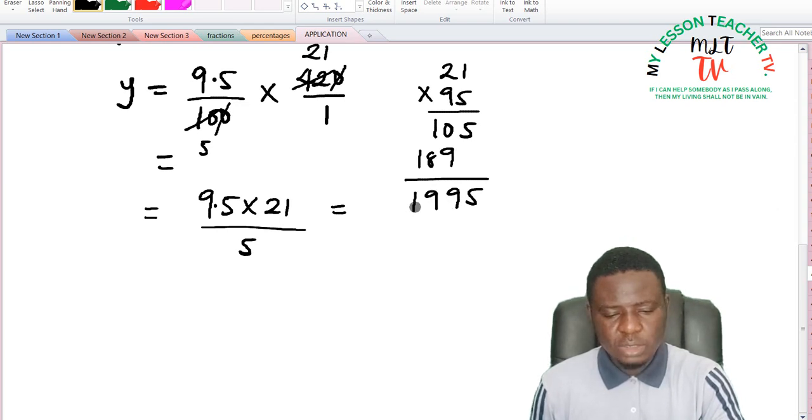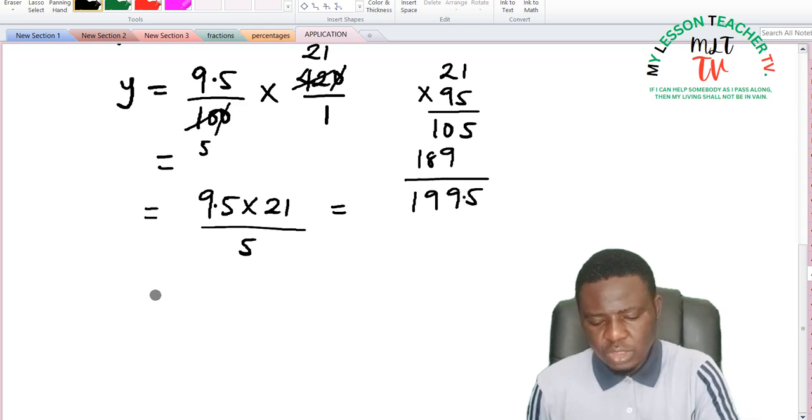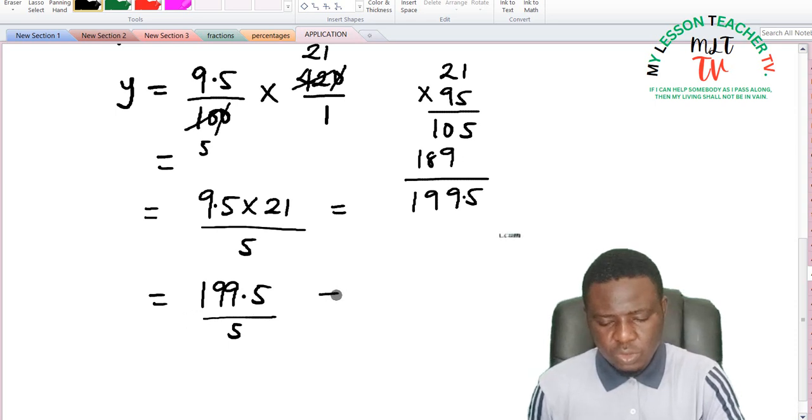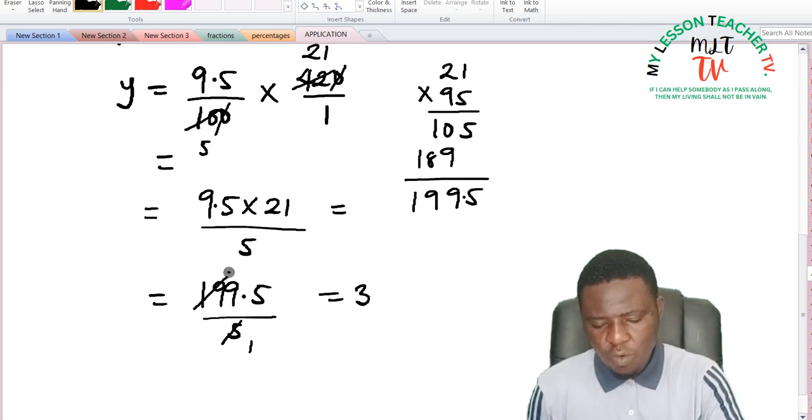And when you introduce your decimal point back it gives you 199.5. So this is equal to 199.5 used to divide by 5.